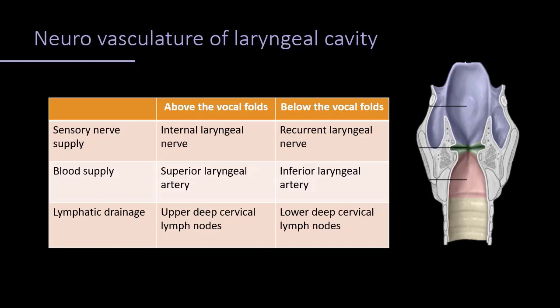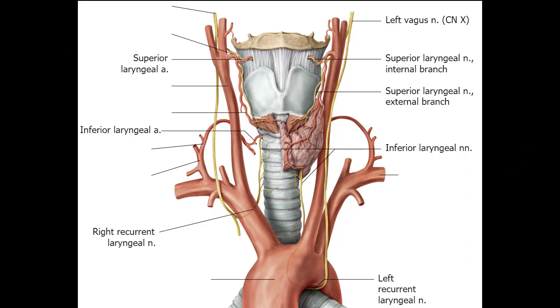Above the vocal folds, sensory nerve supply is the internal laryngeal nerve; below the vocal folds, it is the recurrent laryngeal nerve. Both nerves overlap in the glottic area near the vocal fold. Blood supply above the vocal fold is the superior laryngeal artery, a branch of the superior thyroid artery; below the vocal fold it is the inferior laryngeal artery, a branch of the inferior thyroid artery. Veins are correspondingly superior and inferior laryngeal veins. Lymphatic drainage above the vocal fold is into upper deep cervical lymph nodes; below, into lower deep cervical nodes. The vocal fold acts as a watershed line.